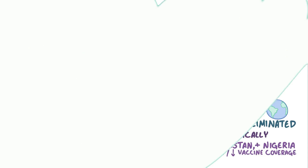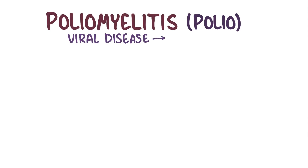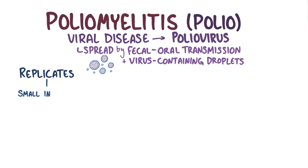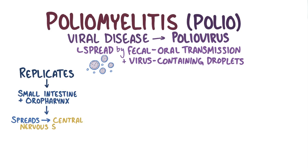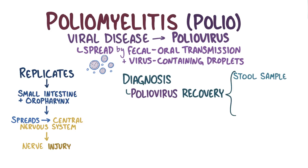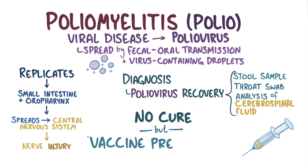As a quick recap, poliomyelitis or polio is a viral disease caused by the poliovirus. It's transmitted by fecal-oral transmission or by aerosol droplets. The virus replicates in the small intestine and oropharynx before it spreads to the central nervous system and causes nerve injury. Diagnosis is done by the recovery of the poliovirus from a stool sample or a throat swab, or by the analysis of cerebrospinal fluid. Lastly, there's no cure for polio, but it can be prevented by polio vaccines.